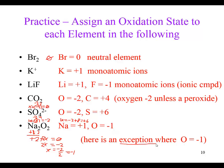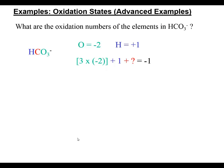Let's consider the bicarbonate ion HCO₃⁻, also known as hydrogen carbonate. I have a rule for the oxygens - they're a negative two each, and there are three of them, giving a total of negative six. My hydrogen, since it's not part of a hydride or elemental, has an oxidation number of plus one.